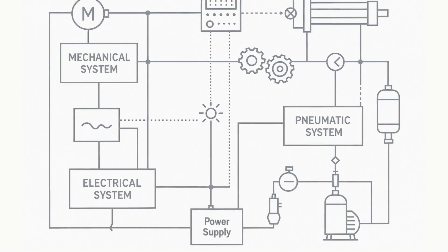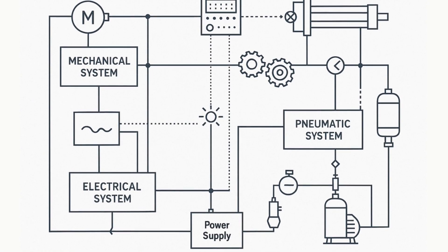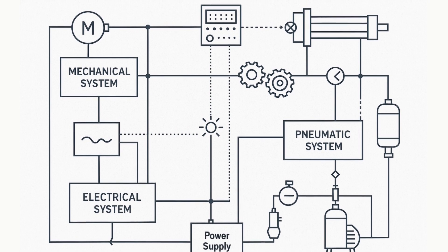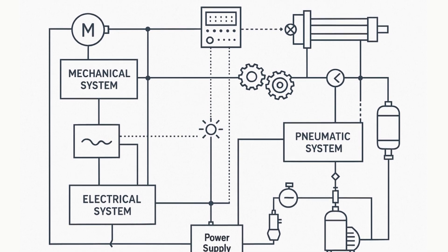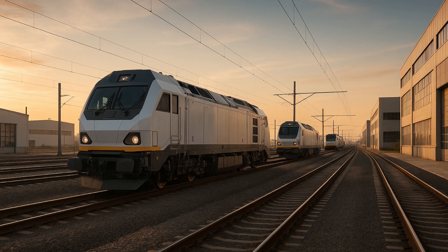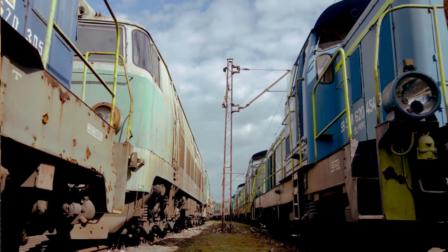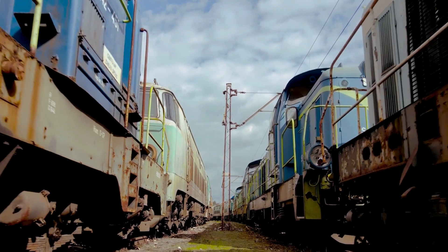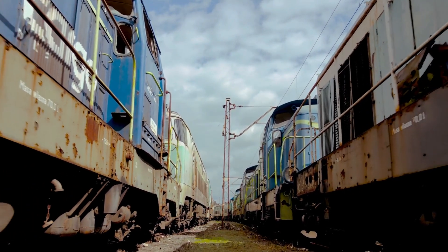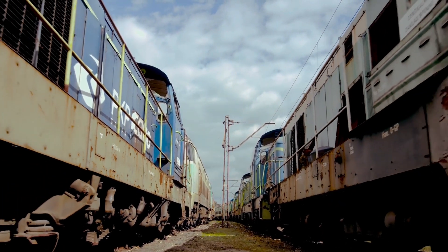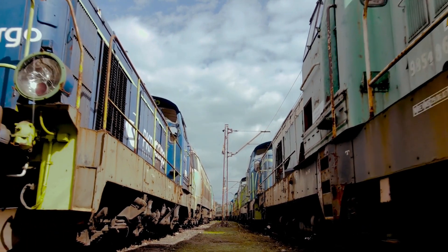Multiple unit operation represents a sophisticated integration of mechanical, electrical, and pneumatic systems. As locomotive technology evolves, these coordination principles continue to adapt, ensuring efficient and safe operation of increasingly complex railway consists. The future promises even greater integration capabilities as digital communication and advanced control systems enable seamless operation across diverse locomotive technologies.